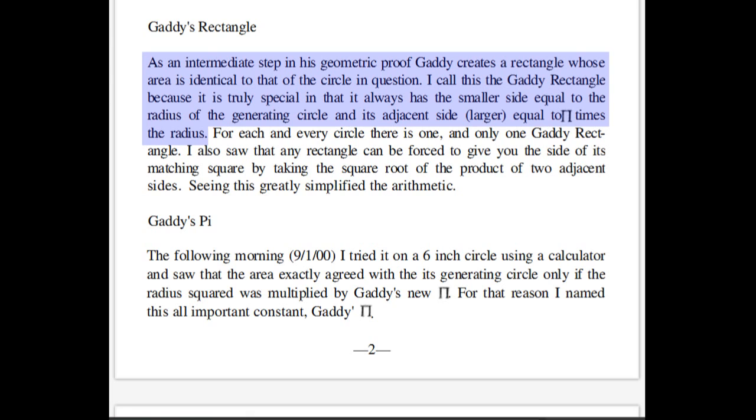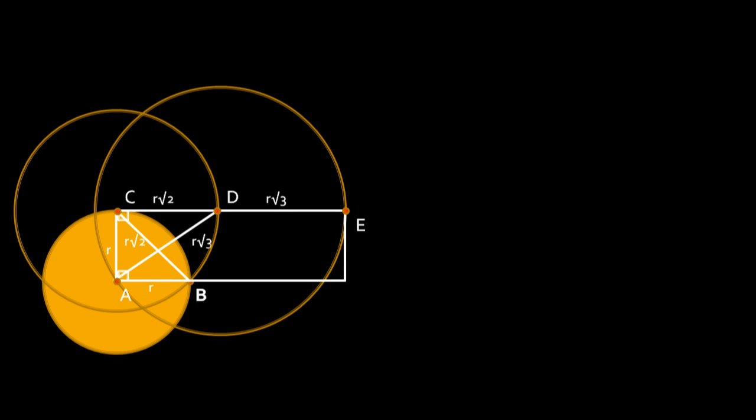Unfortunately, René doesn't explain why he thinks this rectangle and the circle in question should have equal areas. He just arrives at the brilliant deduction that the longer side of the rectangle should have a length of pi times R. However, no part of this construction that we've seen so far would indicate that the length of line segment CE should be equal to pi or anything except the square root of 2 plus the square root of 3 times R.